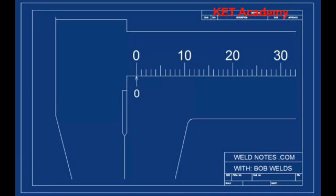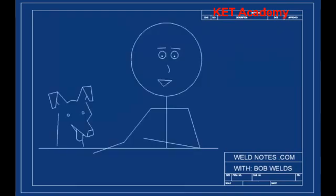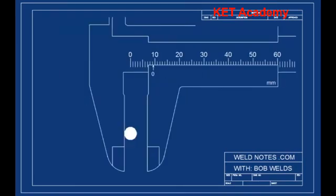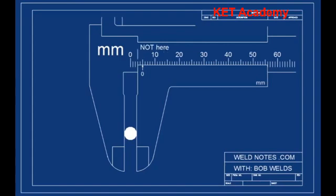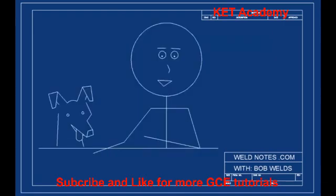The zero mark points to the place where you're supposed to read the main scale — right now it points to zero. Let's close the calipers on a workpiece and read the main scale. These marks represent whole millimeters, so the reading is 1, 2, 3, 4, 5 — five millimeters. Be sure to look at the zero mark and not at any other part, as that's a common mistake that will give you the wrong reading.